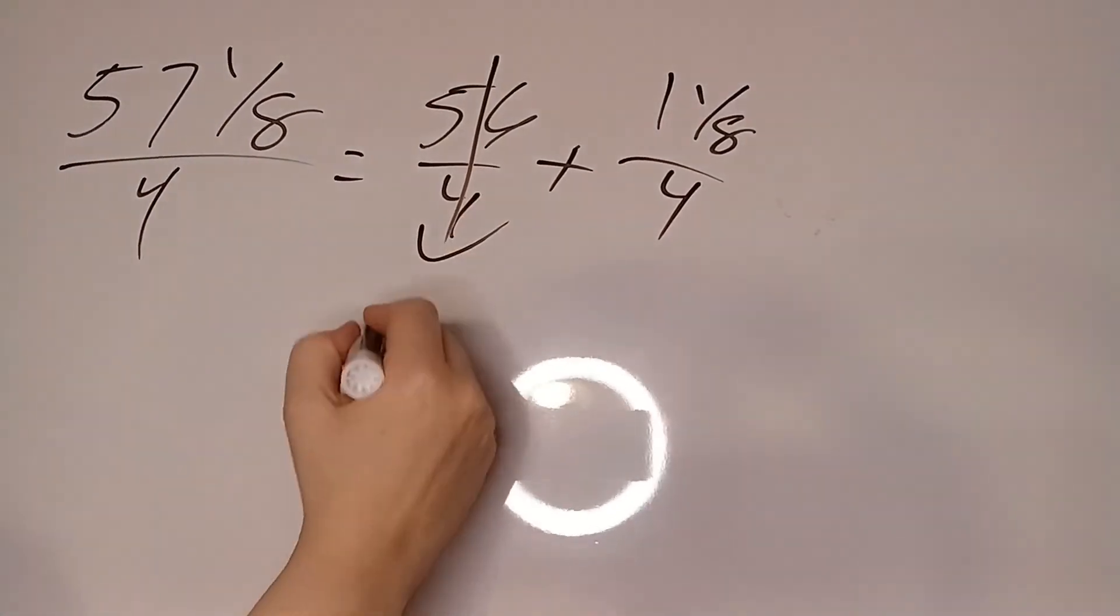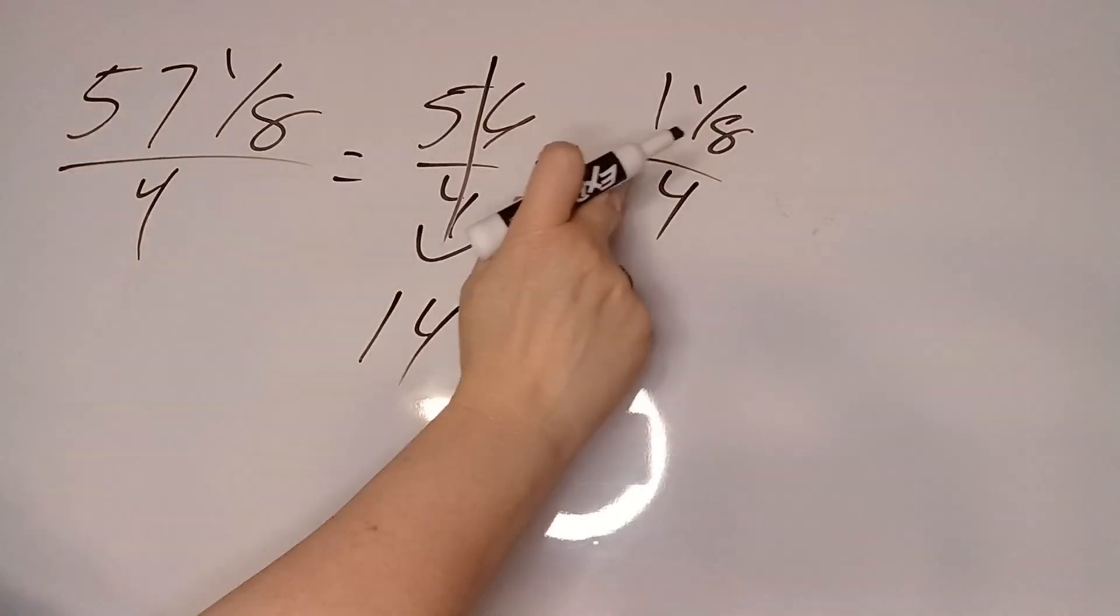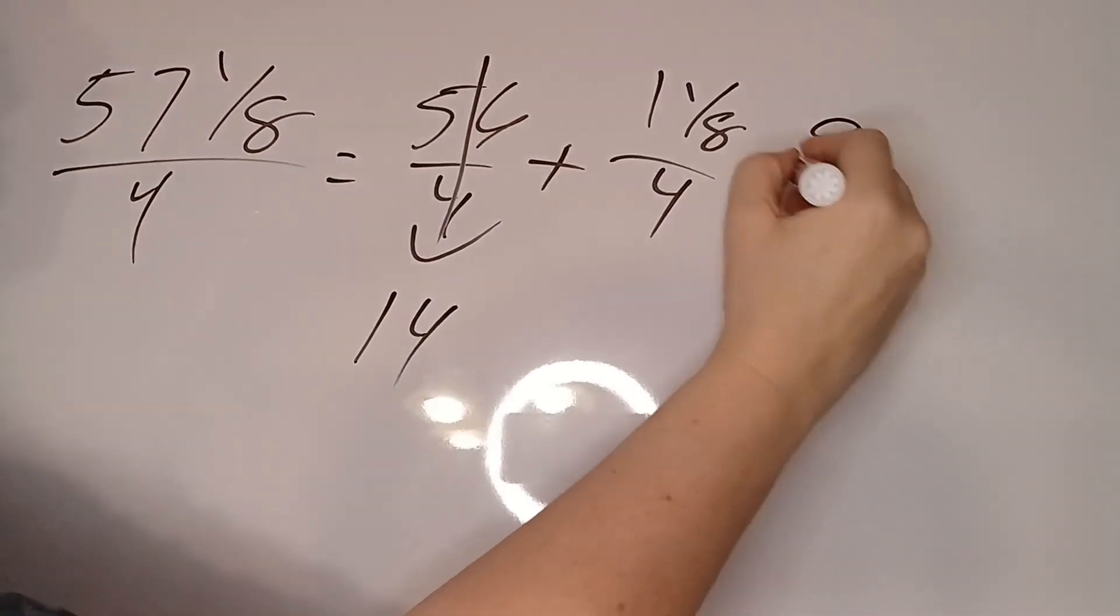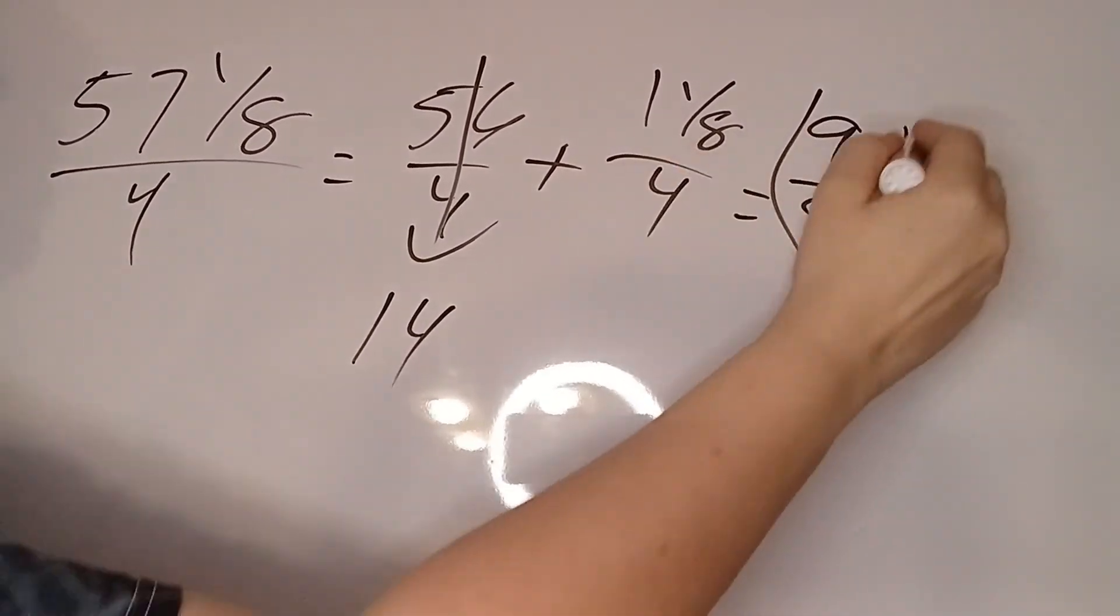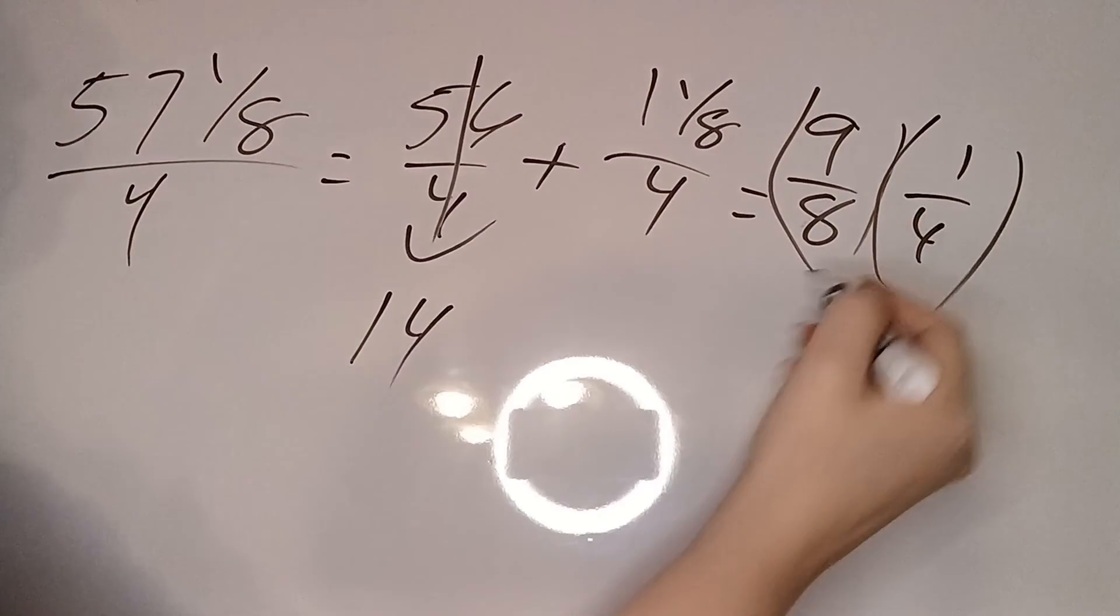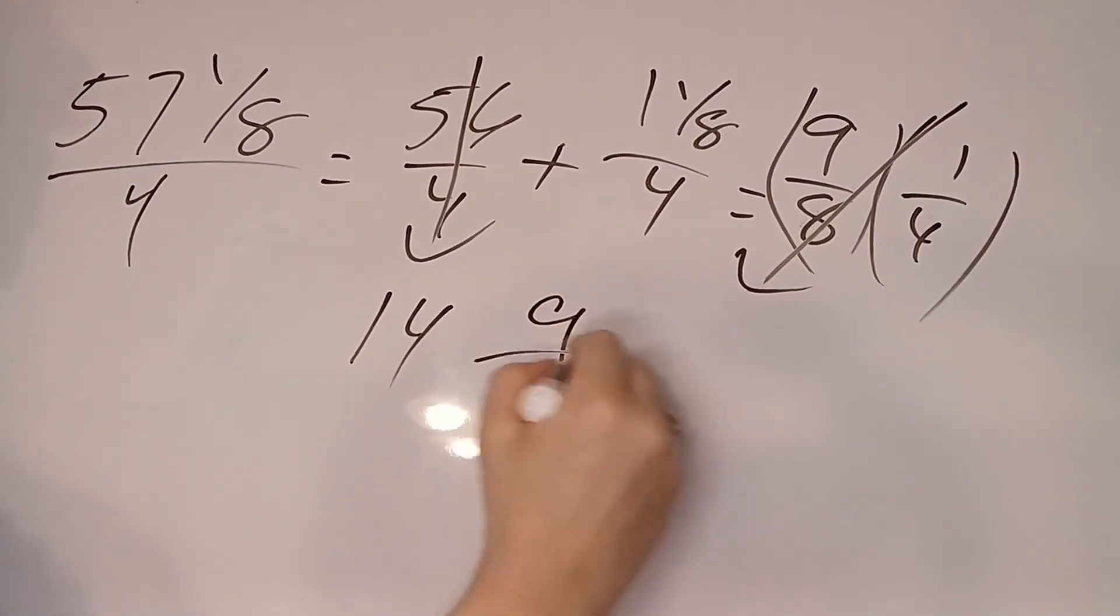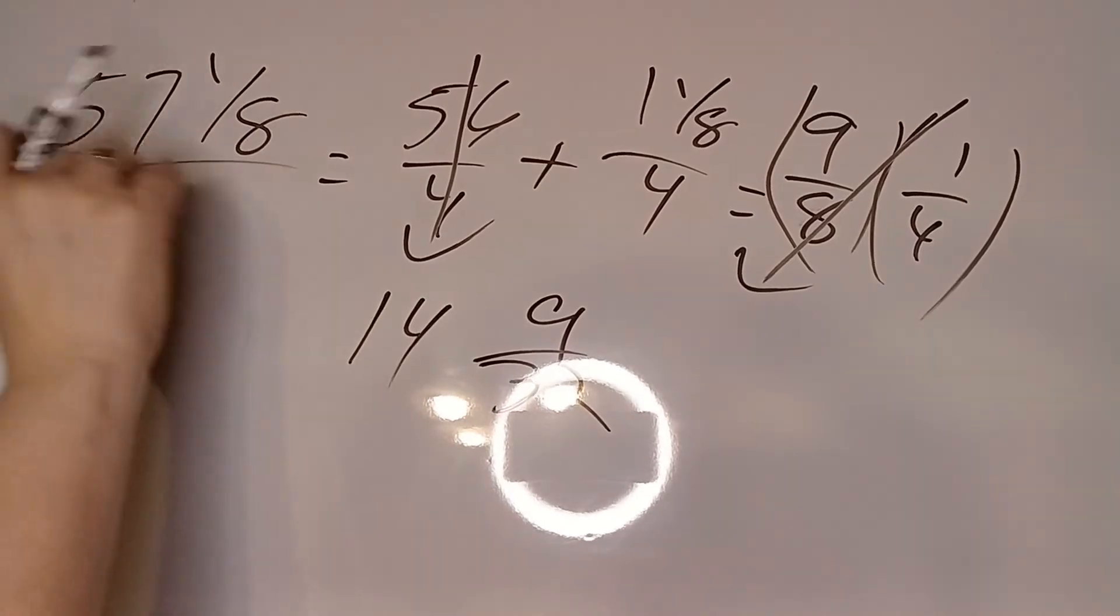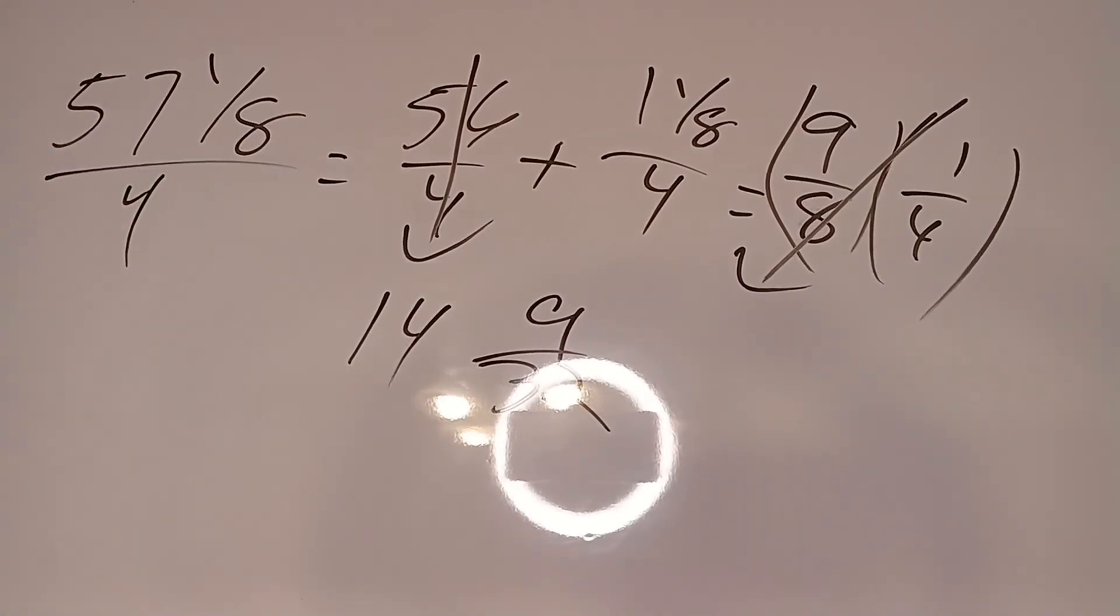56 over 4 plus 1 and an eighth over 4. Okay, we said we knew this when it was 14. Now 1 and an eighth gives us 9 eighths and 1 fourth. So that's going to give us 9 thirty-seconds. So you can see this works with some really ugly numbers and simplifies it quite a bit.